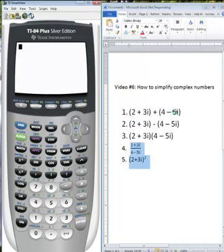Now what we want to do is to enter in our first example. We have parentheses 2 plus 3i. In order to access the i, press the second button and then the decimal. Once we enter in our expression and press enter, the calculator gives us 6 minus 2i.